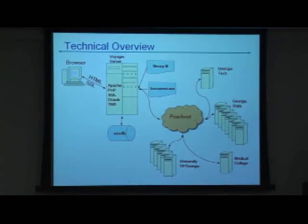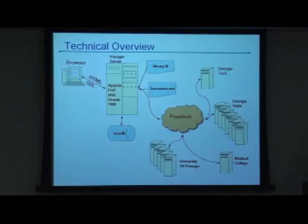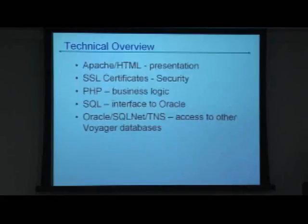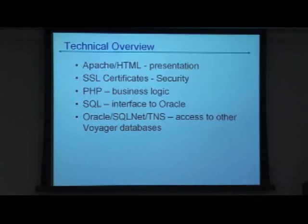We did it by adding entries in the TNS names file for all the institutions in the system, and having another file on a server that relates the Voyager DB key — which is a part they added for universal borrowing — with the DB ID, and then pulling out the database username, password, and TNS entry name. We did this through Apache, with SSL certificates for protection, PHP for the business logic, SQL interface to Oracle, and TNS for access to other databases.